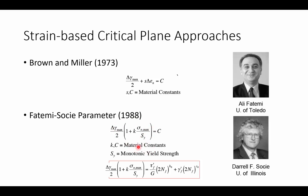Inside the Fatemi-Socie parameter we have three material constants: K and C, typical of the critical plane approach, plus the monotonic yield strength of the material to normalize the max stress. This parameter can actually be coupled with the Ramberg-Osgood equation that describes how the cycles to failure evolve in our structure. Using this combined equation, we could use it to not only plot our hysteresis loops but also predict our cycles to failure.